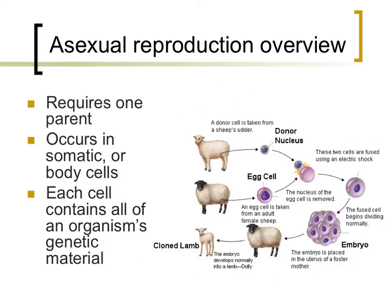The 'A' in asexual reproduction means 'not.' Asexual reproduction is a form of reproduction that is not sexual — that is, it does not involve two parents or sex cells called gametes. Asexual reproduction requires only a single parent. In this process, identical copies of cells are made. The process occurs in somatic, or body cells — anything found in the body except for gametes — that contain 100% of the genetic material that an organism usually possesses.